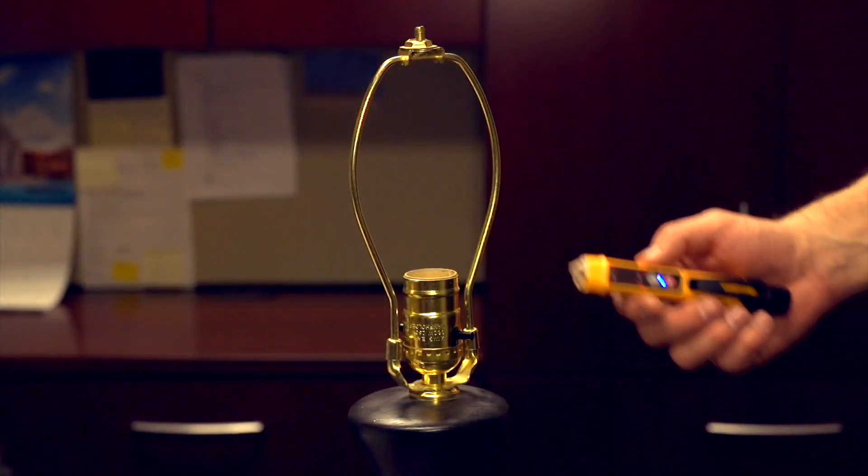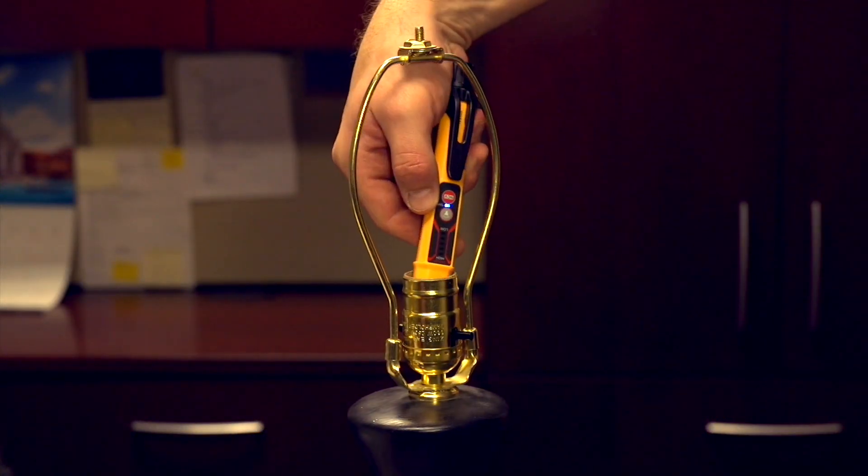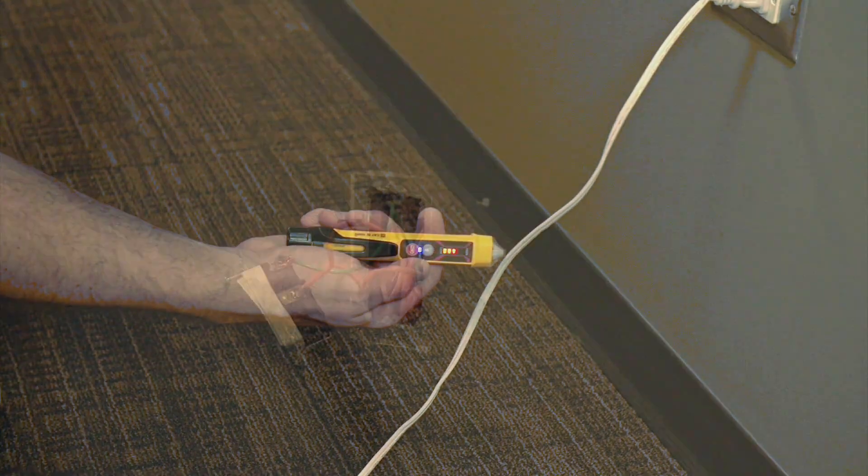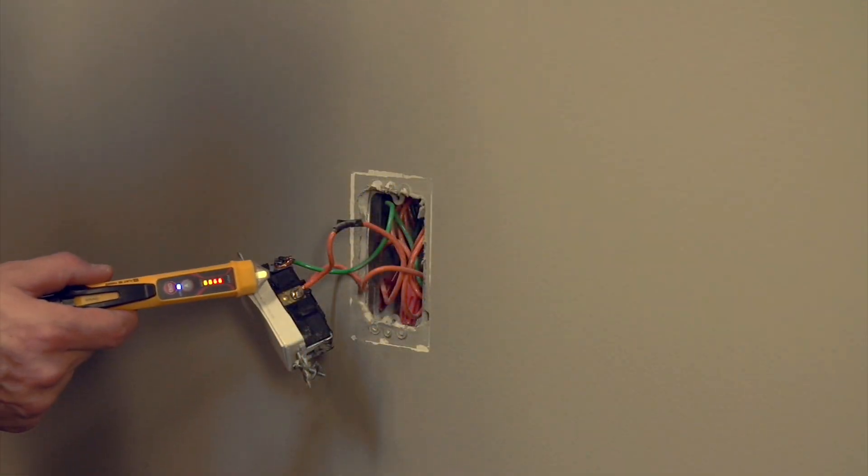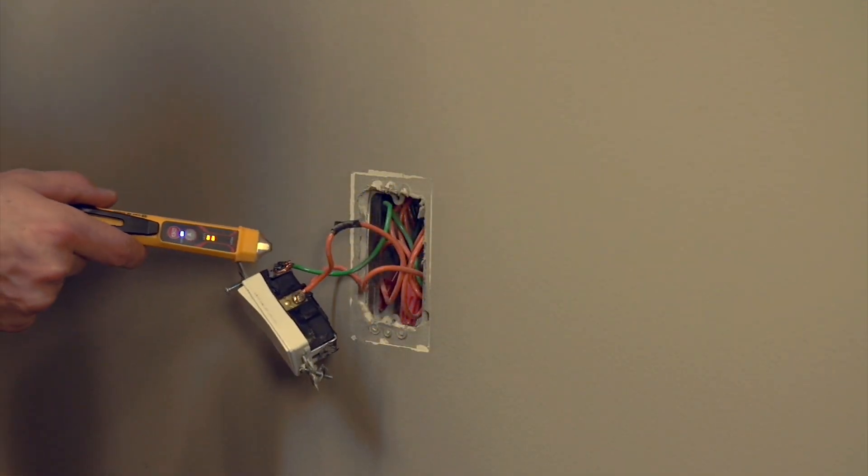Then test the unknown system and then finally repeat the test on the known live system. When the non-contact testers detect the presence of voltage, various models may provide continuous chirps or you may see a series of flashes or both to confirm the tester has detected voltage.